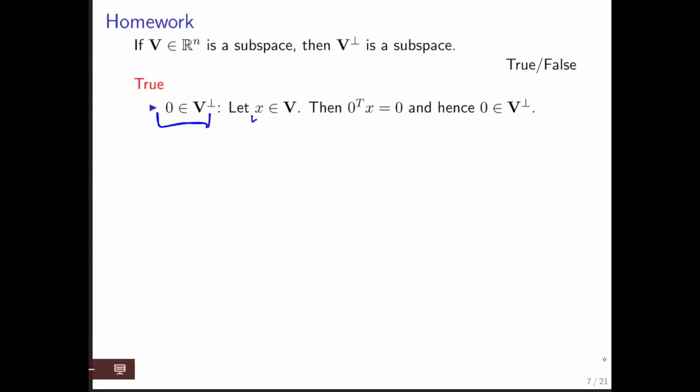If we take any vector x in V, then the question is: is 0 perpendicular to x? Because if 0 is perpendicular to x, where x is an arbitrary vector in V, then it must be the case that 0 is in the set of all possible vectors that are perpendicular to all the vectors in V. And notice that that's true, because the dot product of the 0 vector with any vector is 0.